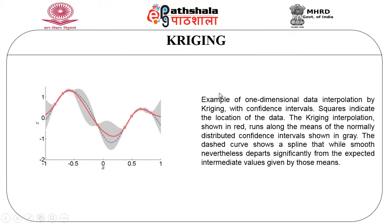The next one is a Kriging modeling technique, another example taken from Wikipedia. This is an example of one-dimensional data interpolation represented by the Kriging technique with confidence intervals. The squares indicate the location of the data. The Kriging interpolation is shown in red, which runs along the means of the normally distributed confidence intervals shown in gray. The dashed curve shows a spline that departs significantly from the expected intermediate values given by the means.